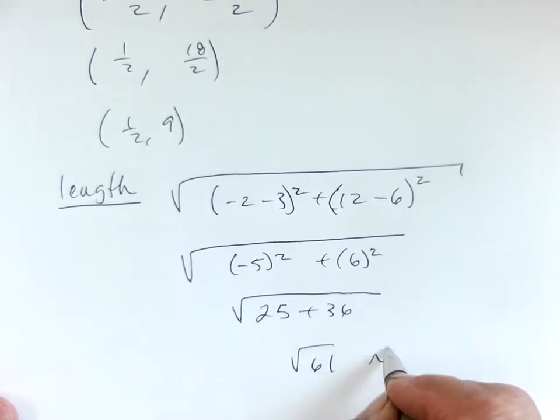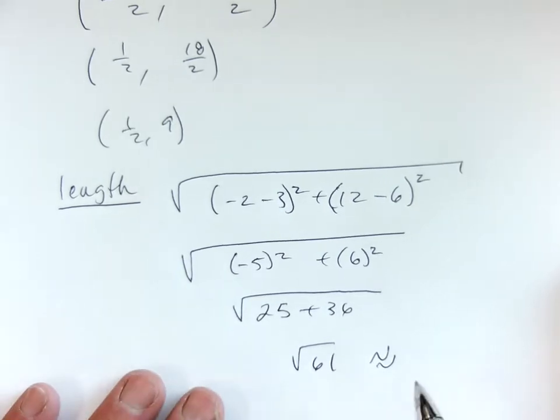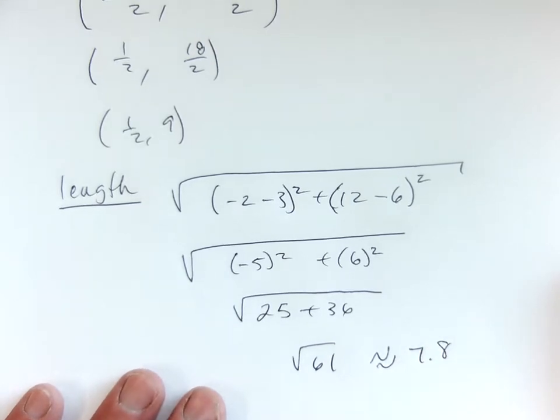25 plus 36 to 61. Square root of 61 or approximately equal to, I don't know, where's the calculator? I get about 7.8. Okay, thumbs up so far? Everybody agree? Okay, that's pretty easy.